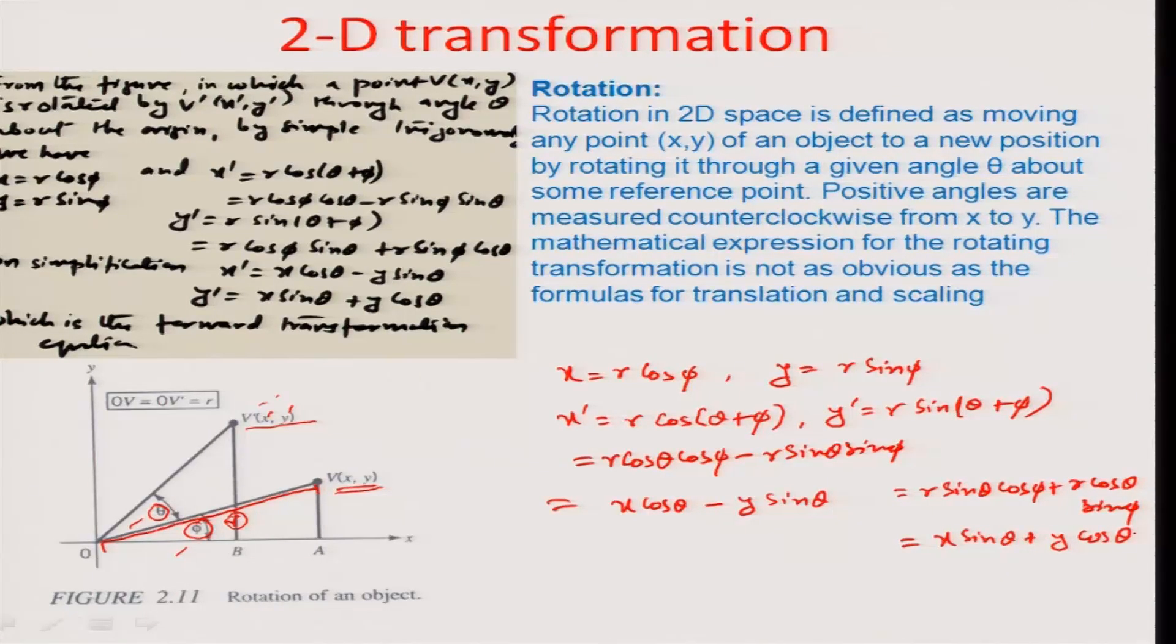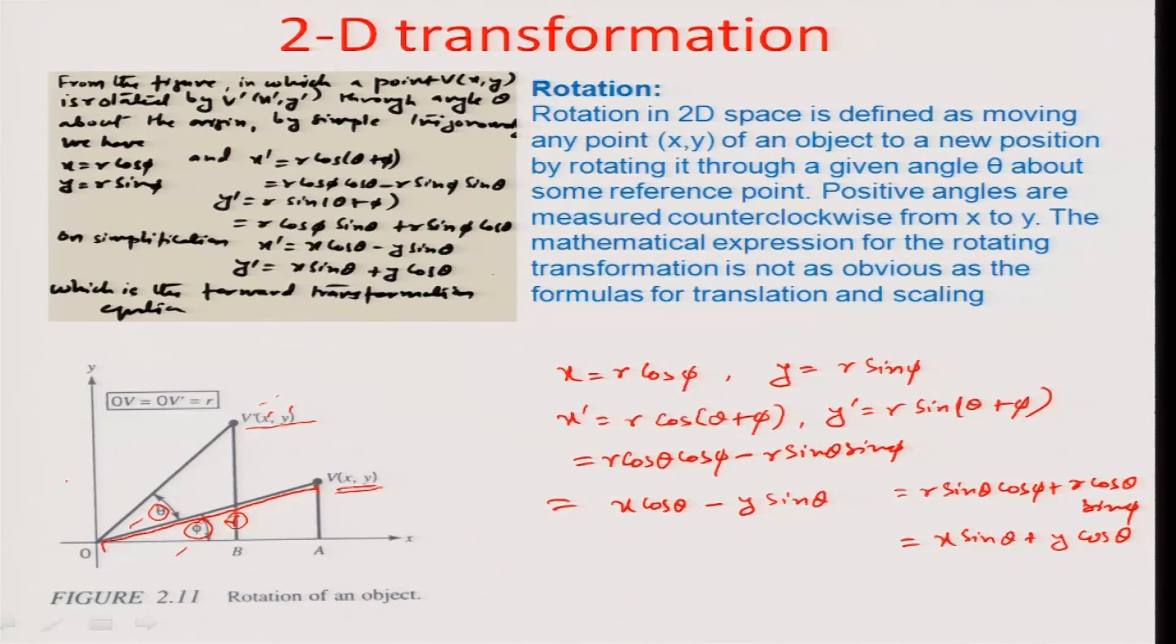In a matrix manner we can always say that x dash y dash, the new matrices, are formulated out of a matrix. The new vectors x prime y prime can be represented as a matrix: cos theta minus sin theta, sin theta plus cos theta, times x y. That is how you can actually represent rotation, and mind you this rotation is about the point 0,0 along the z axis.